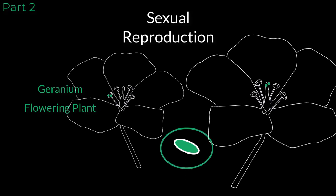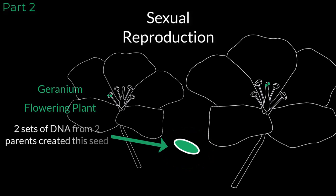The idea here is that by combining two sets of DNA together from two different organisms, the offspring will have a new combination of DNA, making it different from either parent with its own unique set of traits. It is not an exact clone of either parent. It is a unique combination of the two.